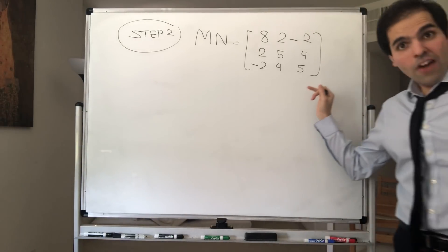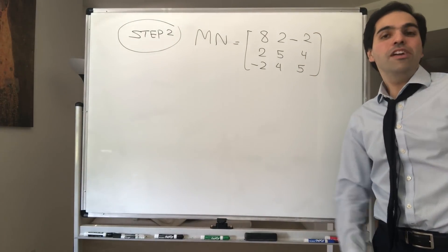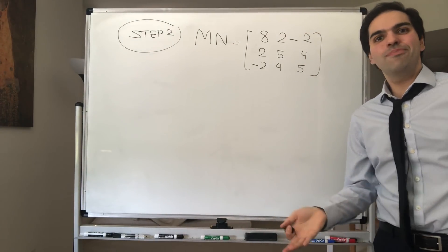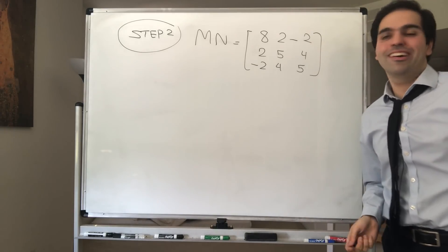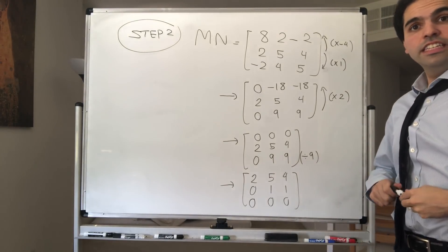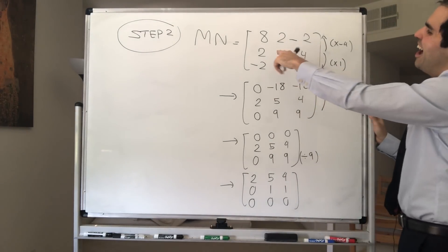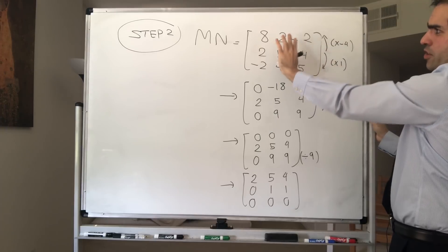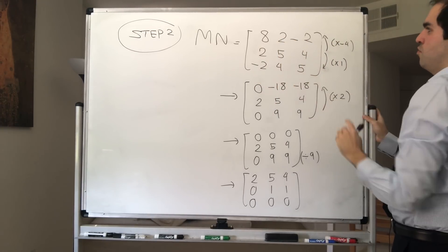Alright, so now again, let's take MN and how would we reduce it? Because we have nothing else to lose. In the Putnam, there are 3 hours per half session anyway, so why not? Alright, so here are the details of the row reduction, in case you want to skip it. So you have to start with the matrix 8 2 -4, 2 5 4, -2 4 5.